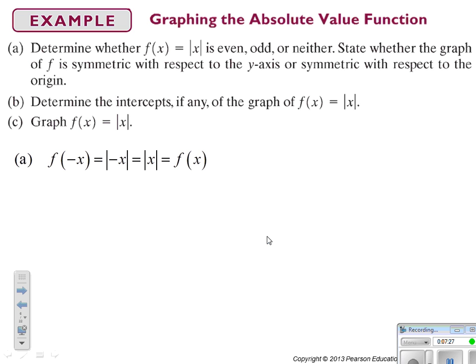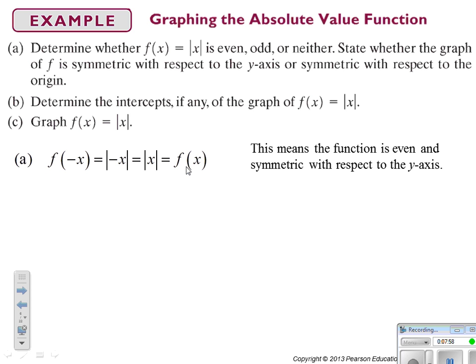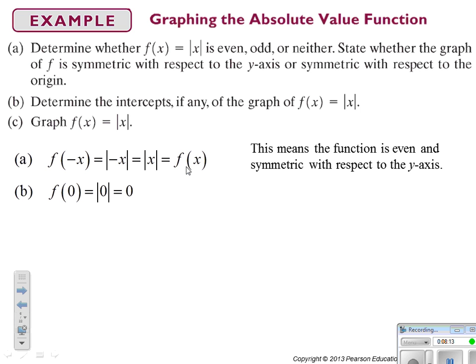When we put in a negative value for x, the absolute value makes all negative values positive. So putting in negative x into our function is the same as putting in x, which equals our original function. When we put a negative value in and get back our original function, that is called even, and we have symmetry with respect to the y-axis. It gives us that nice V shape — same for negative x as it is for positive x. When we put in 0, the absolute value is the distance from 0 on the number line, so f(0) = 0.